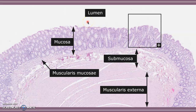You can see the lumen — that's where stool is passing through — and this is the innermost layer, the mucosa. It's called the mucosa because it has a lot of goblet cells, which are unicellular glands that secrete mucin. That mucin coats the surface to keep it from drying out and to lubricate it for the contents coming through. Over here you can see a little bit of hyperplasia, some extra cell growth.